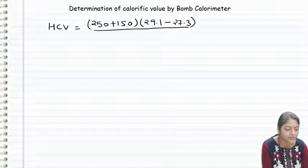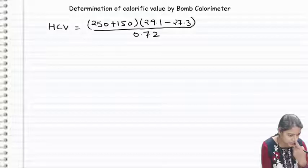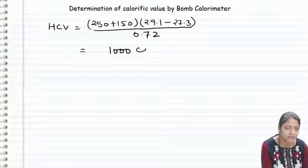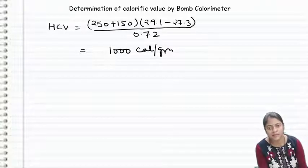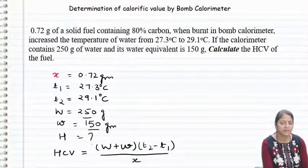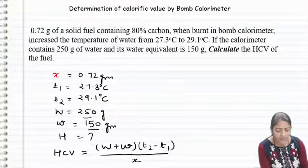x value has given us 0.72. So this has given us that is 1,000 calorie per gram. This one will be 1,000 calorie per gram. It will be 1,000 calorie per gram, which we call our answer.